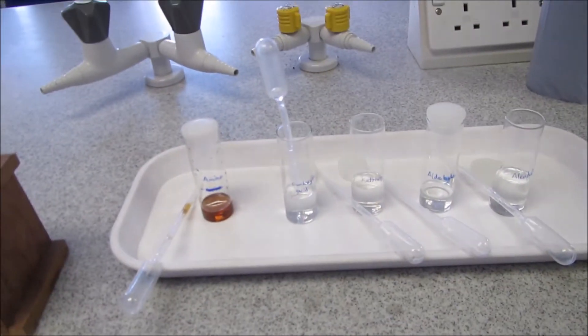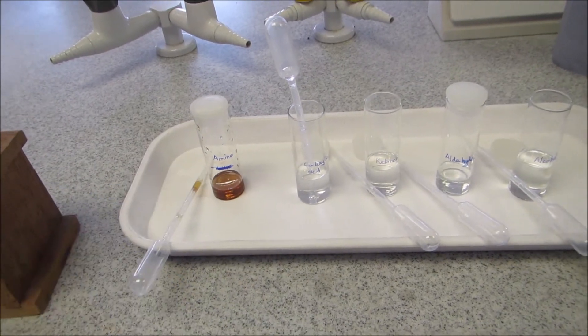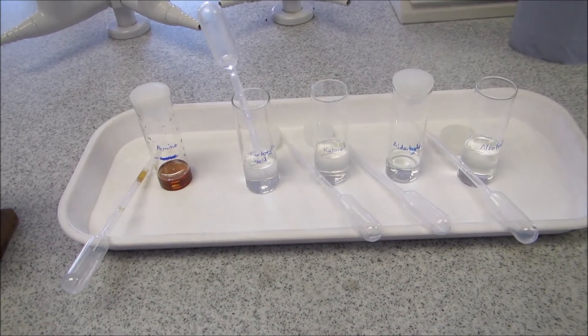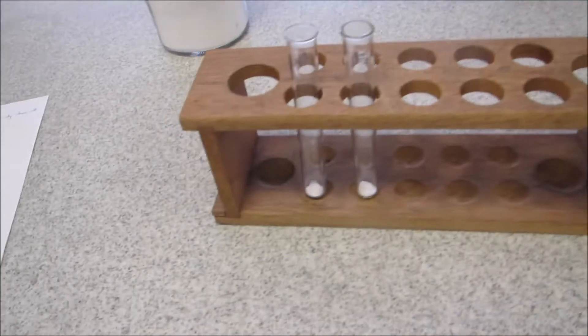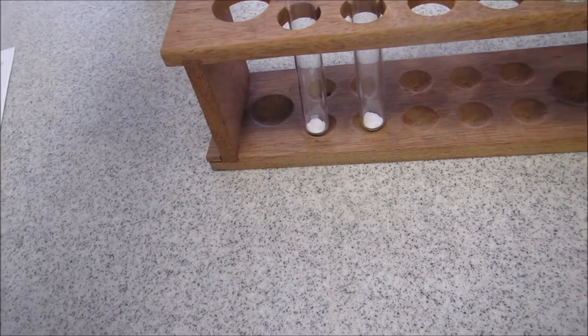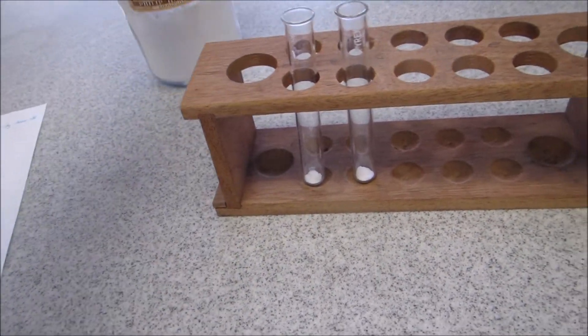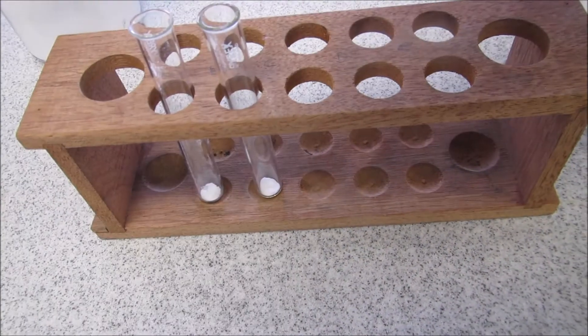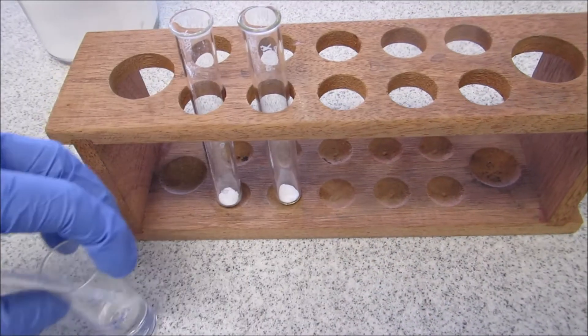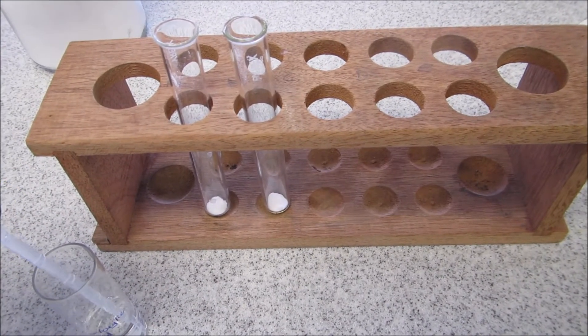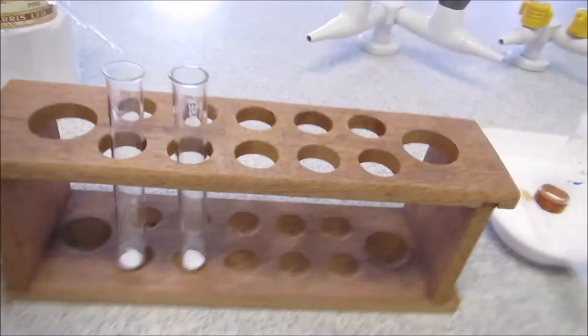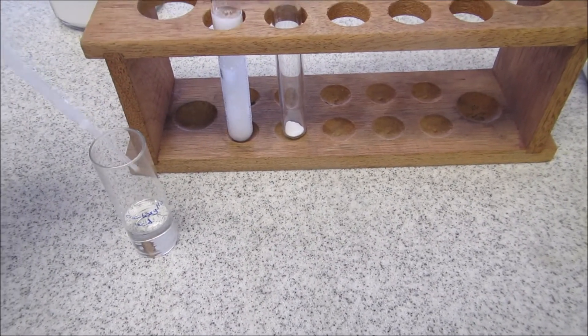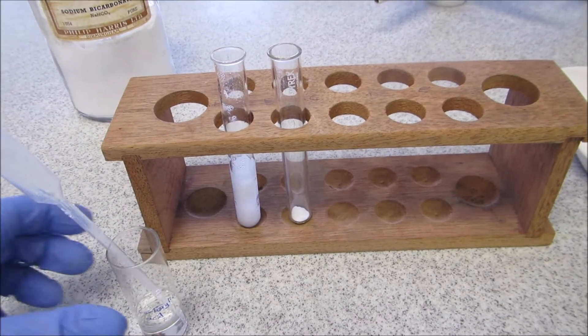So from the pH test we were able to identify our amine, so I'm not doing anything further with that. But now I want to try and work out which is actually our carboxylic acid. So I've added some sodium bicarbonate to the bottom of two test tubes. I'm just going to show you the reaction that happens with the carboxylic acid. I'm just taking the carboxylic acid first, and you can see there's a lot of fizzing or effervescence.